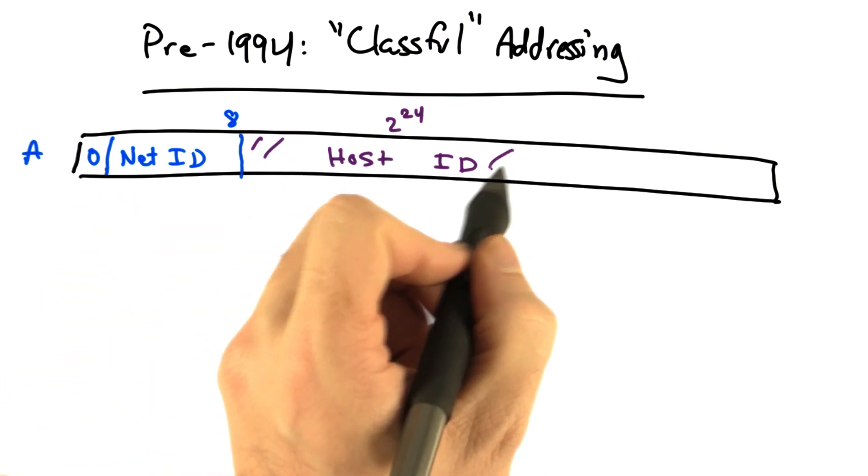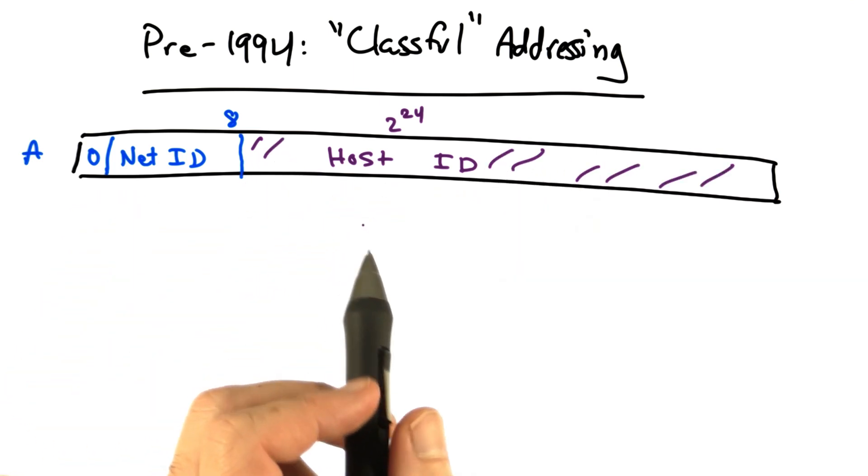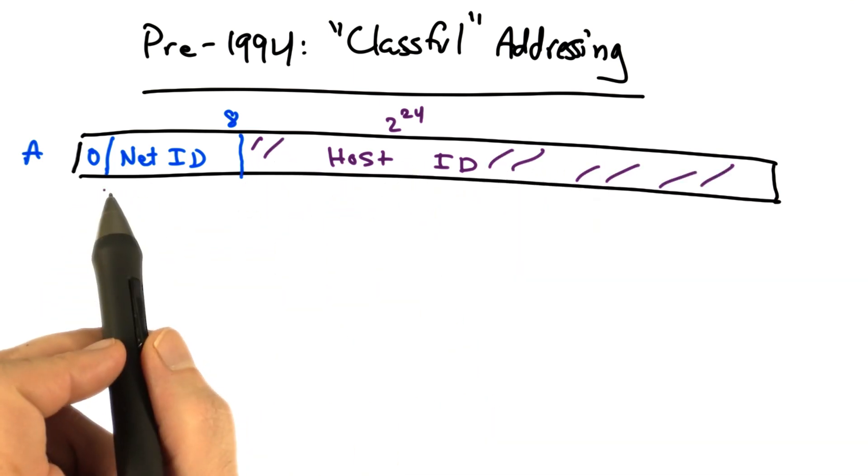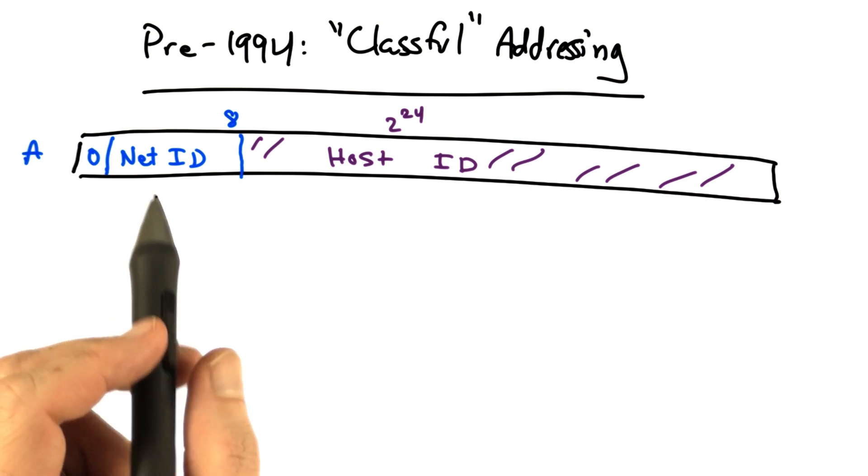The remaining portion of the address space is dedicated for hosts on that network. In this case, any class A network can support up to 2 to the 24th hosts.